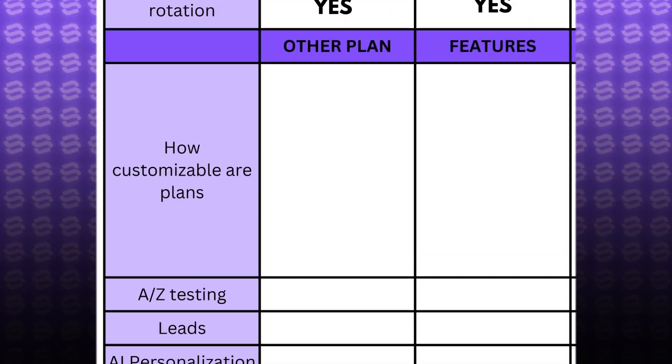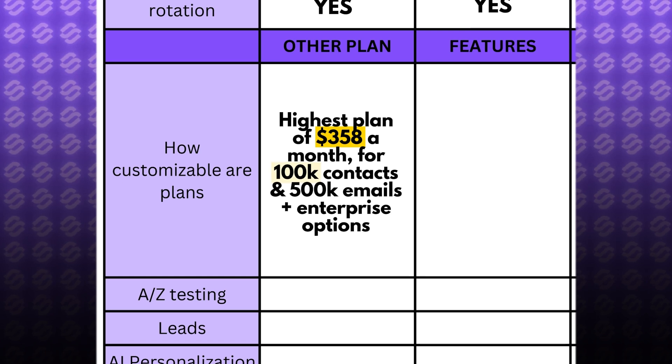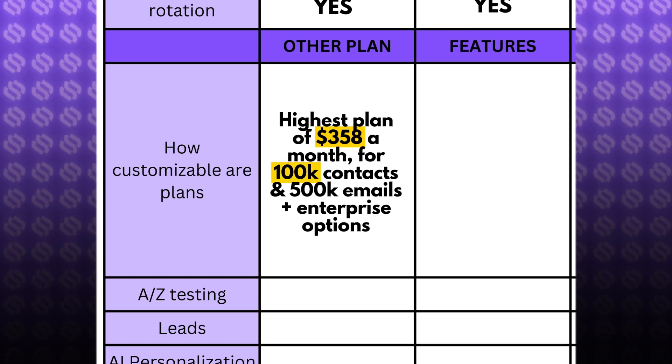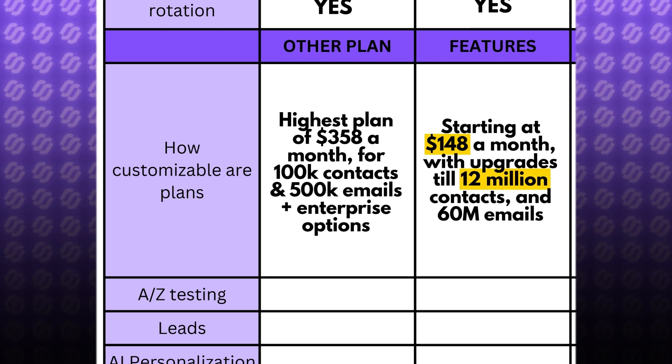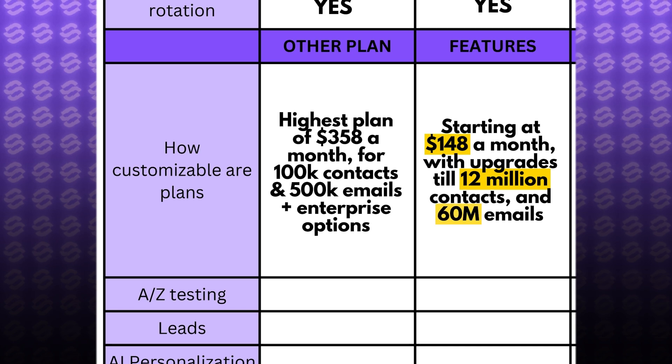These were all the features in the lowest tier plans for both platforms. Now let's talk about the highest plans. Instantly's highest plan — called Lightspeed — costs $358 a month, getting you 100,000 active contacts with the ability to send 500,000 emails a month. For more, you can chat with Instantly for an enterprise plan. Smartlead's most advanced plan starts at $148 a month and you can scale it to as much as 12 million active contacts with an ability to send 60 million emails a month — though this could cost up to $25,000 a month.